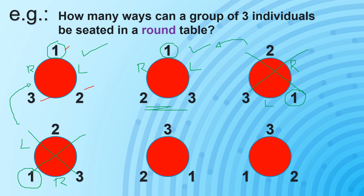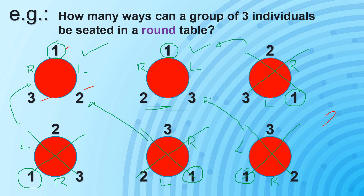On the next one, again, 1 is our point of reference. On the left side of 1 we have 2, while on the right side of 1 we have 3 — so this is not a unique arrangement either, since this is the same as our previous arrangement. Similarly, the remaining arrangements also duplicate earlier ones. So upon counting, the number of possible arrangements that we can really make out of these 3 individuals seated at the round table is just only 2 — there will just be 2 distinct or unique ways of seating these 3 individuals.